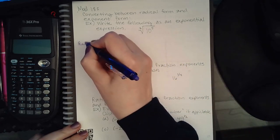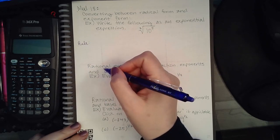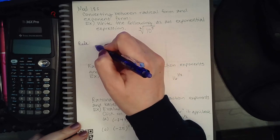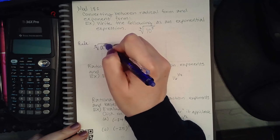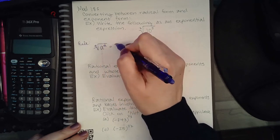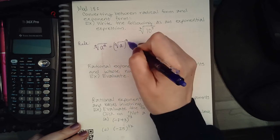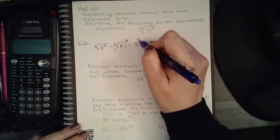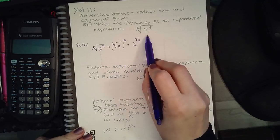to know what the rule is. This rule is located in the notes packet you received in class. The rule says n√a^m is the same as a^(m/n) in exponent form.